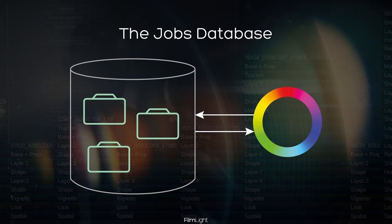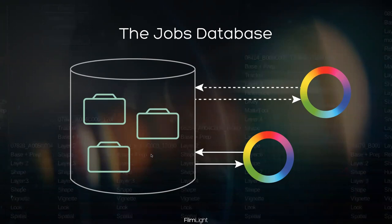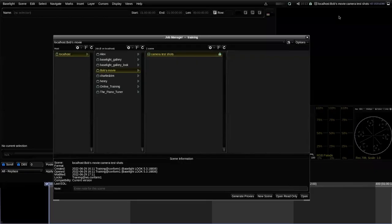It's possible for other Baselight systems to connect to the same database — that's one of the benefits of using a database system. If another machine tried to open the same scene, they would get a message saying the scene could only be opened for read access, because only one system can be writing into a scene at any one time. They could still open the scene but would get a red padlock icon instead of a green one, indicating they can only view changes but not make any.